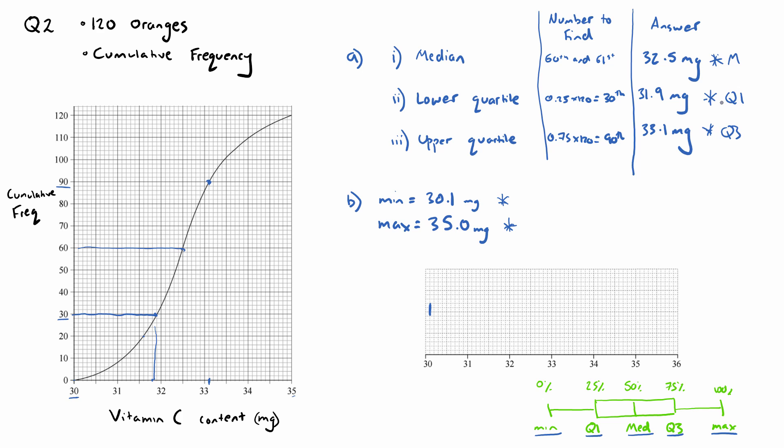Next is the lower quartile Q1, which is 31.9, so that's going to be about there. Median 32.5. And then upper quartile Q3, 33.1. We're nearly there. And then max is 35.0, so it's just all the way over here.